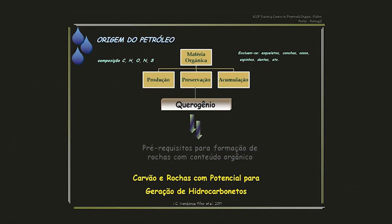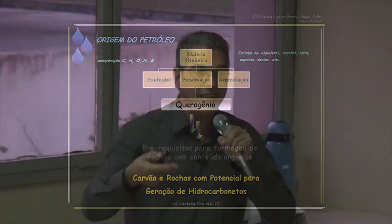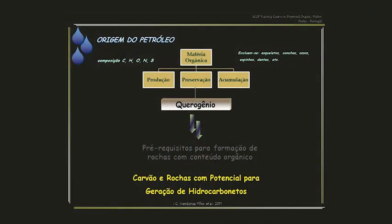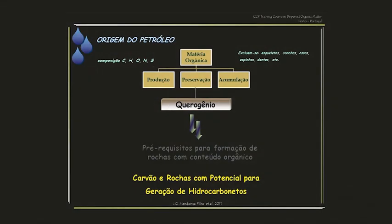Para se ter a formação de uma rocha orgânica — seja carvão ou rocha geradora de petróleo — é preciso ter produção, preservação e acumulação de matéria orgânica. A matéria orgânica é produzida no sistema biológico e depois vai para o sistema geológico. Em média, a taxa de preservação global de matéria orgânica durante a história geológica do planeta é de apenas 0,1% da produção. Portanto, se produz muito, mas se preserva muito pouco.